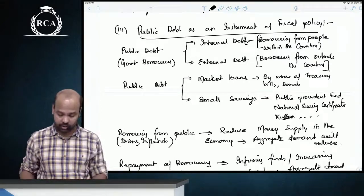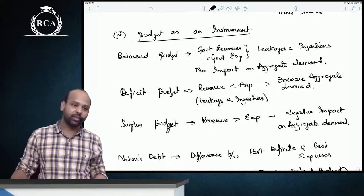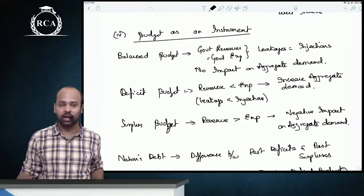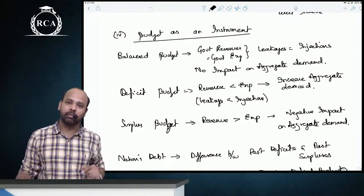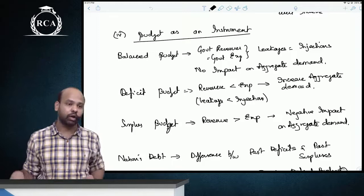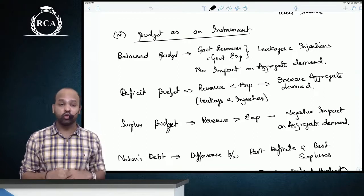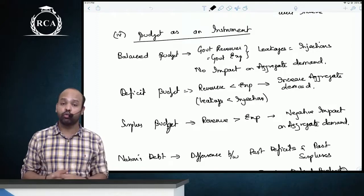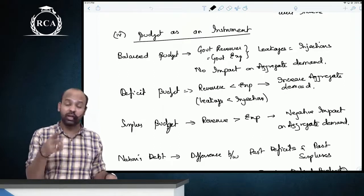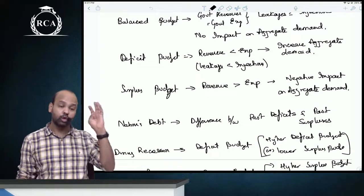Using the budget as an instrument, budgets can be classified into three categories: balanced budget, deficit budget, and surplus budget. A balanced budget, where government expenditure equals government collections, should have no impact on aggregate demand. A surplus budget has a negative impact on aggregate demand, as more money is pulled out of the market than is injected. A deficit budget has a positive impact on aggregate demand, as more money is infused into the market than withdrawn. During recession, the government would want a greater deficit budget or a lower surplus budget; during inflation, a lower deficit or higher surplus budget.